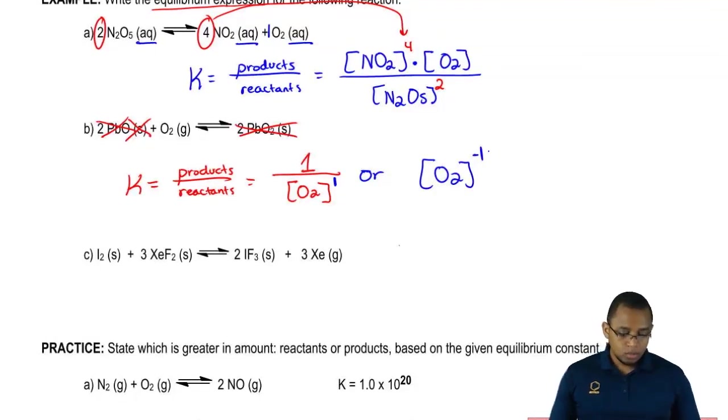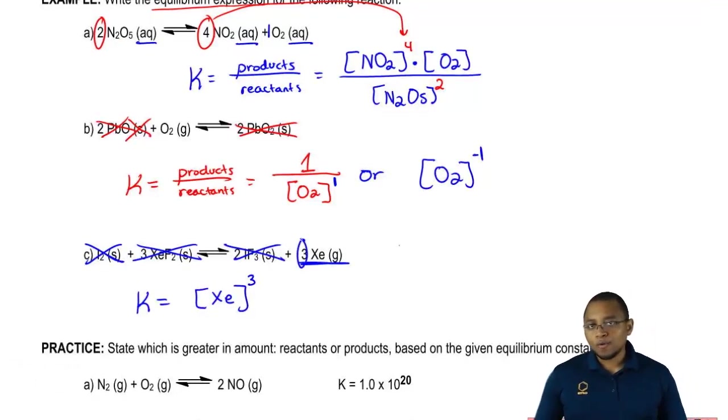For the next one, again we ignore solids. The only thing that we don't ignore is this gas. So here K equals products over reactants, so it just equals Xe cubed because of the 3 over 1.